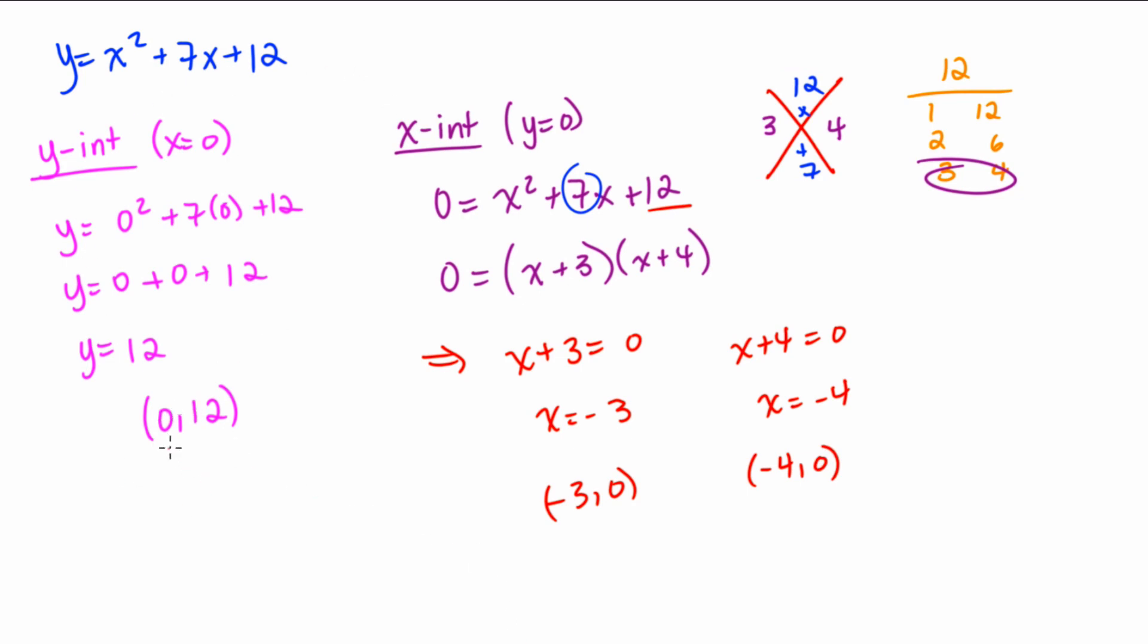So these are our three intercepts: 0, 12; negative 3, 0; negative 4, 0. Remember when you're solving, or when you're finding intercepts, you're substituting in zeros for x and zeros for y to find your x and y intercepts, and then solving. So you have to use all of your strategies that you know for solving different types of equations.